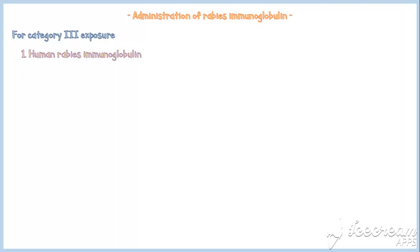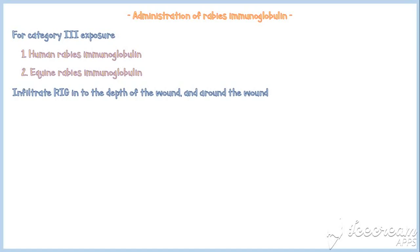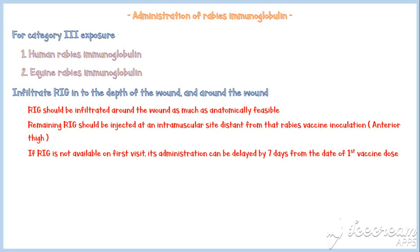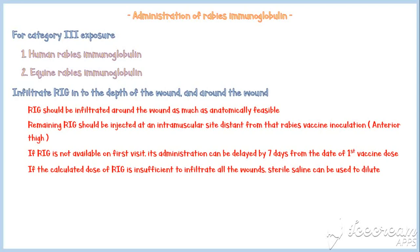Administration of rabies immunoglobulin is recommended for Category 3 exposures. Two types of immunoglobulin are used: either human rabies immunoglobulin or equine rabies immunoglobulin. Infiltrate rabies immunoglobulin into the depth of and around the wound as much as anatomically feasible. Remaining RIG should be injected at an intramuscular site distant from the rabies vaccine inoculation site, for example the anterior thigh. If RIG is not available on the first visit, its administration can be delayed by a maximum of seven days from the date the first rabies vaccine dose is given. If the calculated RIG dose is insufficient to infiltrate all wounds, sterile saline can be used to dilute it as necessary.